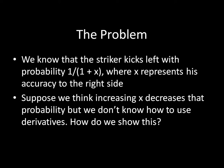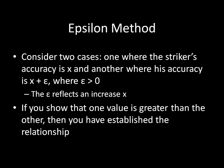The alternative is to use something known as the epsilon method. The epsilon method works as follows. We're going to consider two cases. One is the original case, where the striker's accuracy was simply x — his accuracy to the right side. And another, where his accuracy is x plus epsilon, where epsilon is some value greater than zero. We usually think of epsilon as a very, very small value, so it's just slightly positive. What this epsilon is doing is reflecting an increase in x. In the original case his accuracy was just x to the right side, and in the second case his accuracy becomes x plus epsilon — he's slightly more accurate to the right side.